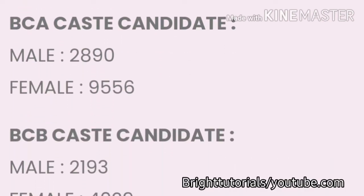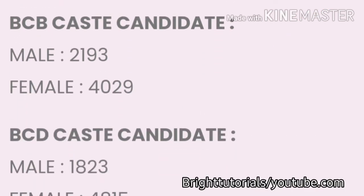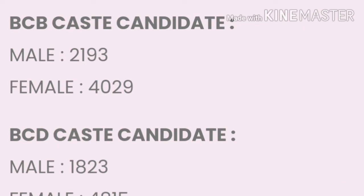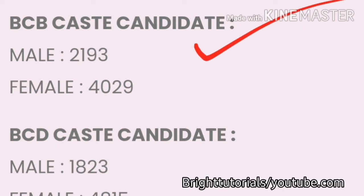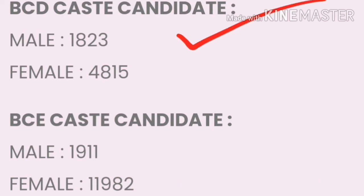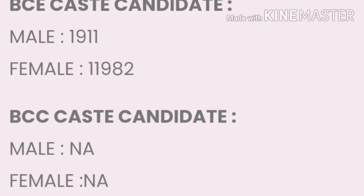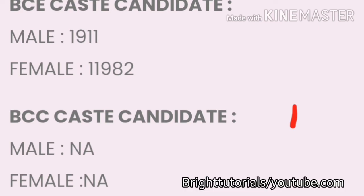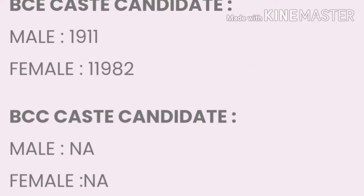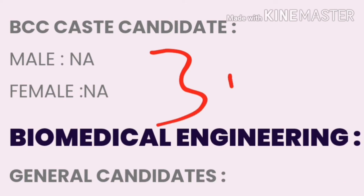For BCA caste in Mechanical Engineering: male cutoff is 2890 and female cutoff is 9556. For BCB caste: male cutoff is 2193 and female cutoff is 4029. For BCD caste: male cutoff is 1823 and female cutoff is 4815. For BCE caste: male cutoff is 1911 and female cutoff is 11982. For BCC caste: cutoff data is not available for both male and female.